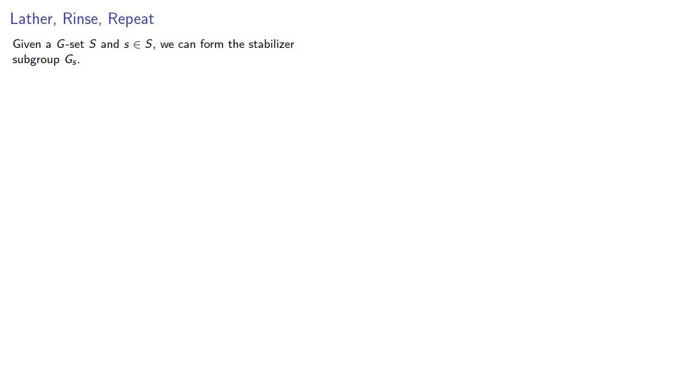Now, given a G-set S and some element of S, we can form the stabilizer subgroup G_s. And this gives us a new set. Any time we have a subgroup, we can form the cosets G mod G_s.